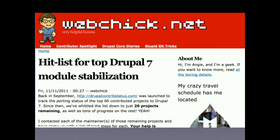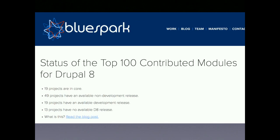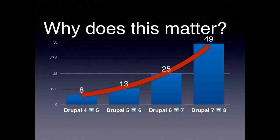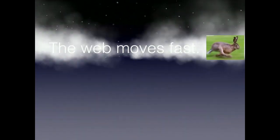This led to blog posts — from Angie and others — about when things are going to be ready, trying to get the community involved to get stuff ready for the next version. There's a Drupal 8 blog post about the status of the top 100 modules for Drupal 8, are they ready or not. Why does this matter? Why is that graph not where we want to go in the future?